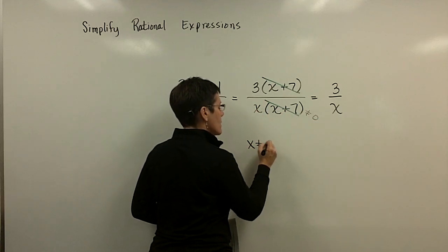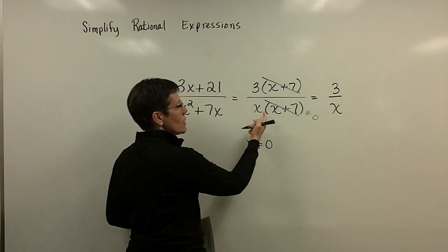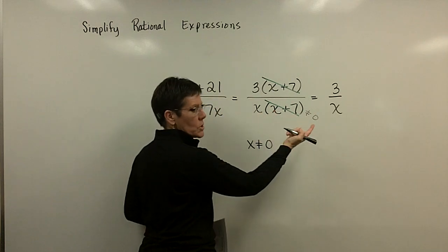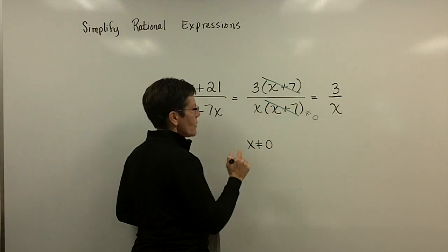Well, I'm going to say here that x cannot equal zero because zero times zero plus 7, which is 7, gives me zero for the denominator. That's a problem.